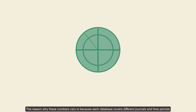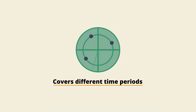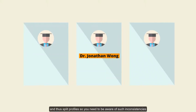The reason why these numbers vary is because each database covers different journals and time periods. There is also the problem of author variant names and thus split profiles, so you need to be aware of such inconsistencies.